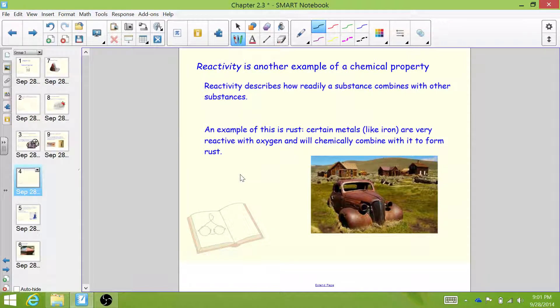As you can see in this picture of the car down here, this car is mostly made of iron. That iron reacted with the oxygen in the air over time, turning it into iron rust, which is iron oxide.